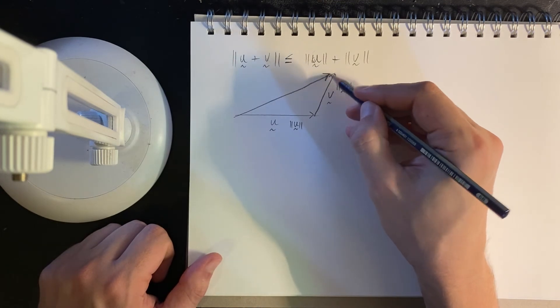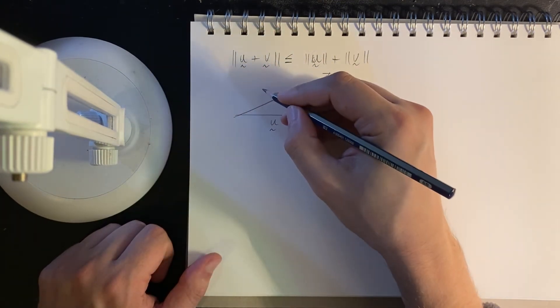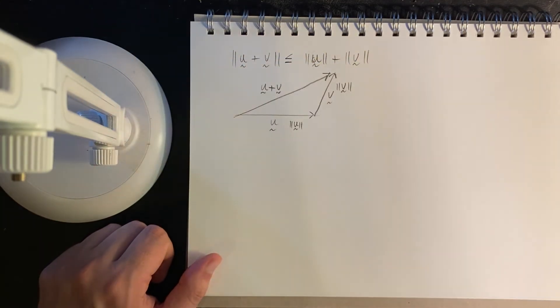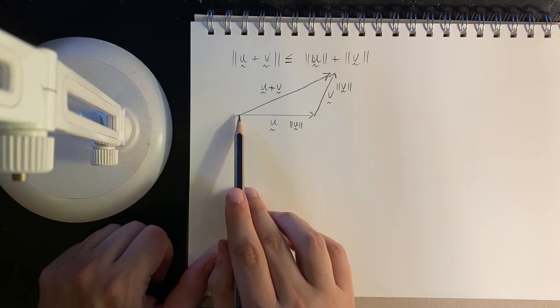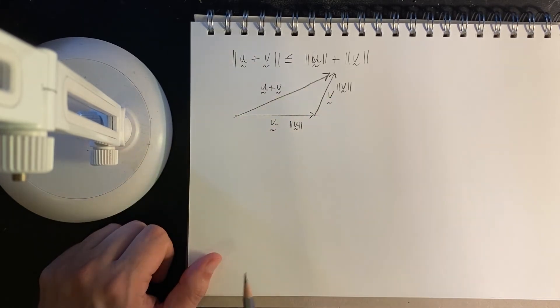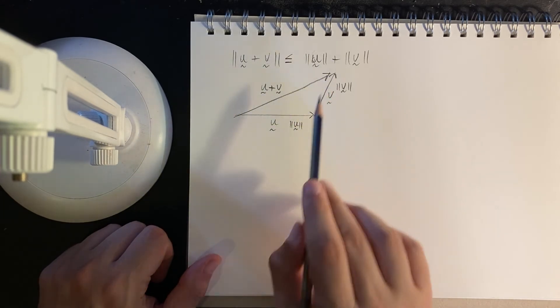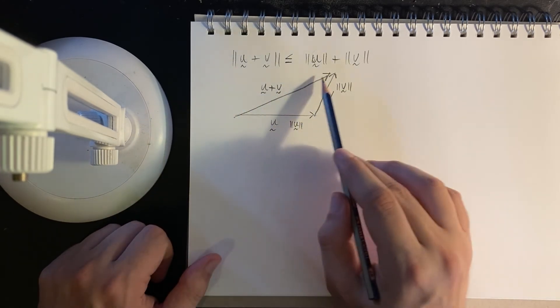The length of this side is the norm u, the length of this side is the norm v. And this sort of third side is the vector summation, the vector result of u plus v. Side note, we can start to think about summing vectors up as a series of translations. We move from here to here, and then from here to here. That's the same motion as going from the start point to the direct endpoint.